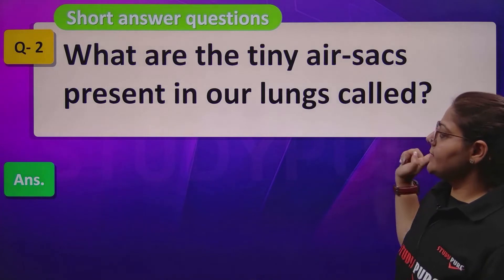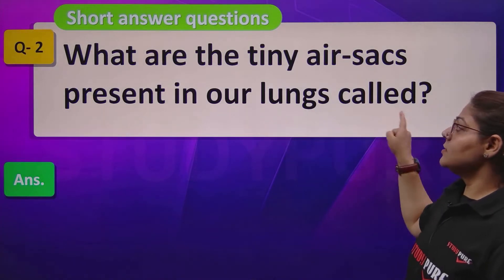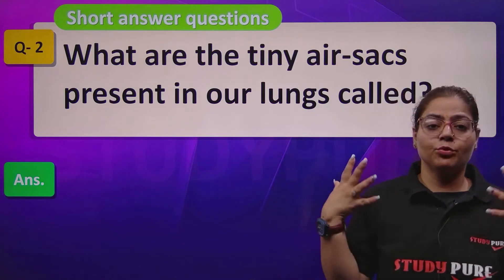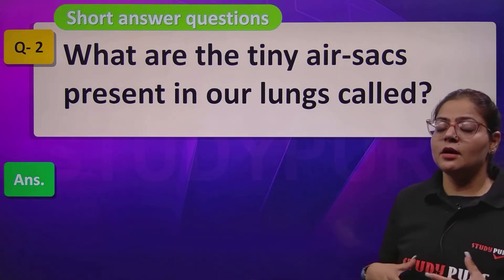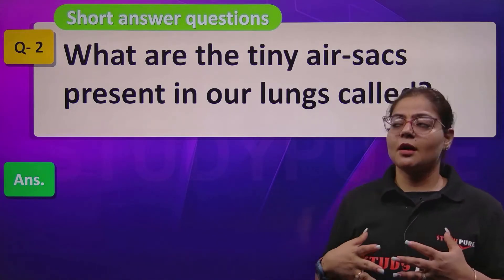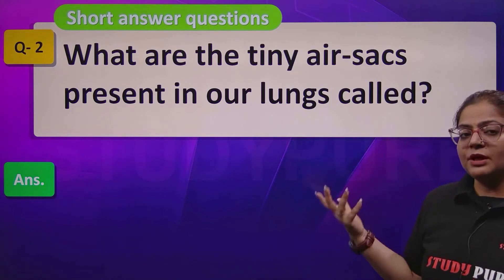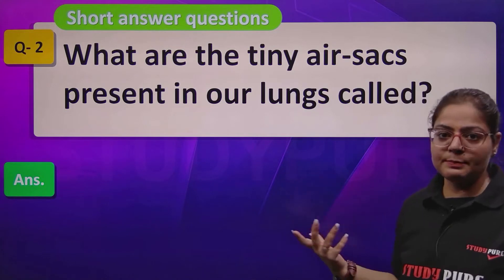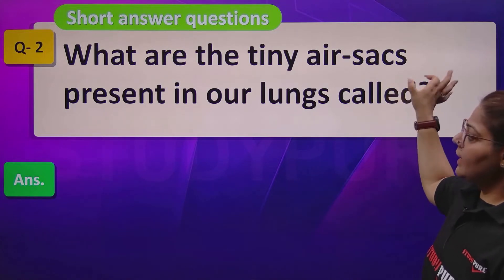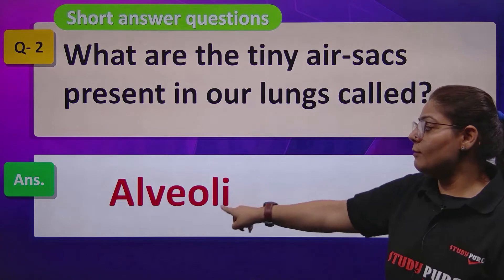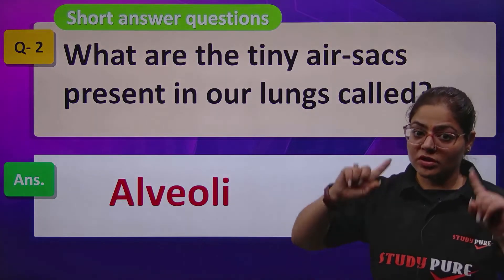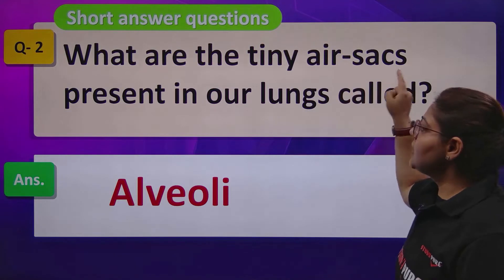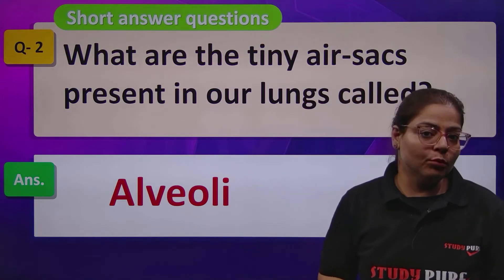What are the tiny air sacs present in our lungs called? Is ke liye aapko yaad hai, conceptual understanding mein humne poori physiology padhi thi, human respiratory system ko poora define kiya tha. Those tiny air sacs present in our lungs are called alveoli.